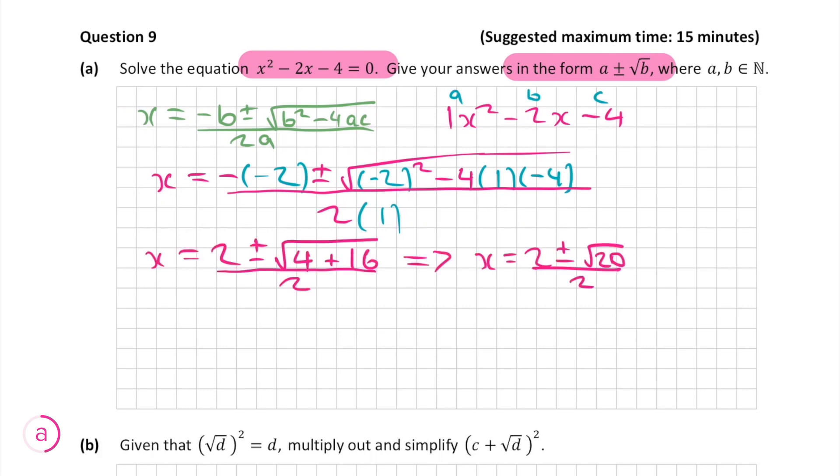Multiplying out our brackets we get x equals 2 plus or minus root 20 divided by 2. However since root 20 can be written as root 4 by 5 we can write this as x equals 2 plus or minus root 4 by root 5 over 2 which can be simplified to 2 plus or minus root 5 over 2.